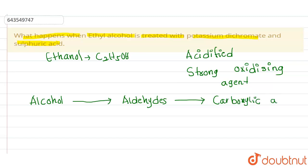But here we can see this potassium dichromate is a very strong oxidizing agent, so we directly get the carboxylic acid. So now we have one clarity that if we react this ethyl alcohol with potassium dichromate and sulfuric acid, we are getting the final product as carboxylic acid.